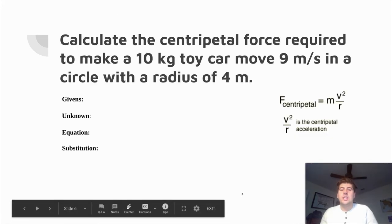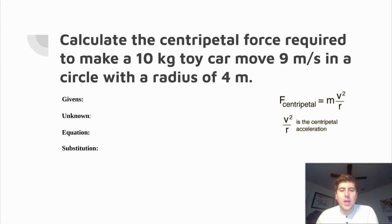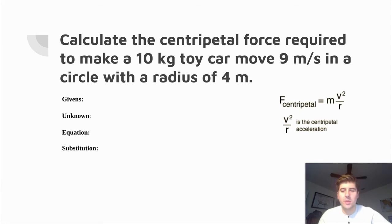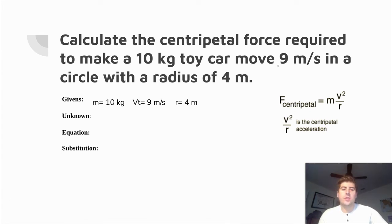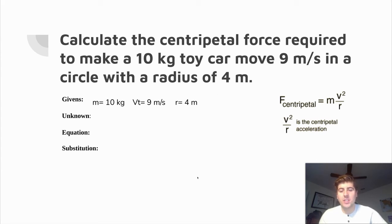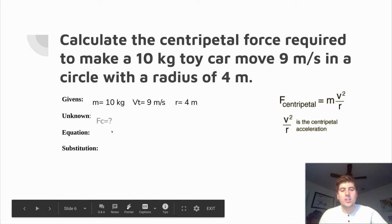This last problem has to do with centripetal force. Calculate the centripetal force required to make a 10 kilogram toy car move at 9 meters per second in a circle with a radius of 4 meters. Using the GUESS method, our givens: mass is 10 kilograms, tangential velocity is 9 meters per second, and radius is 4 meters. Our unknown — what we're looking for — is the centripetal force.